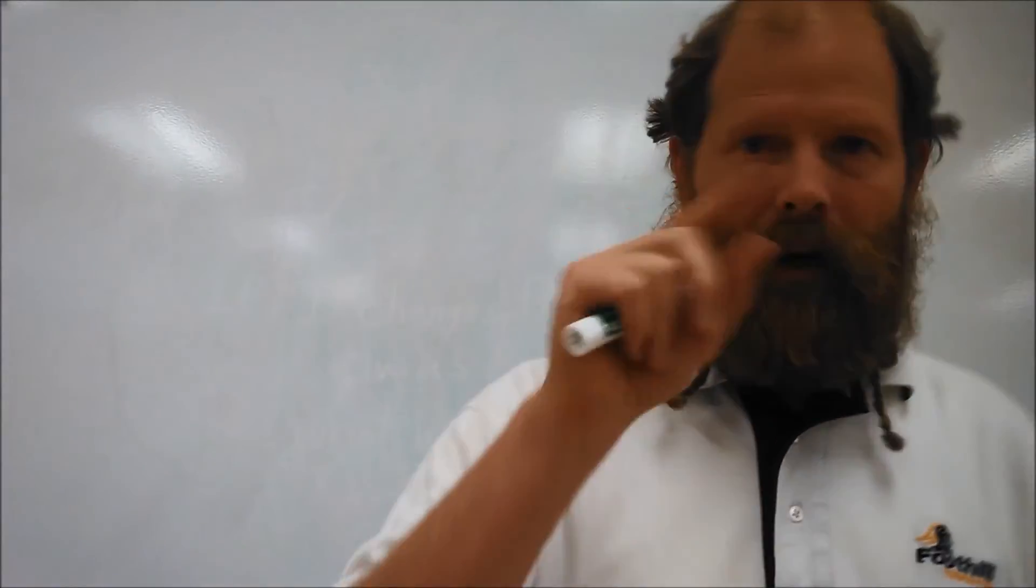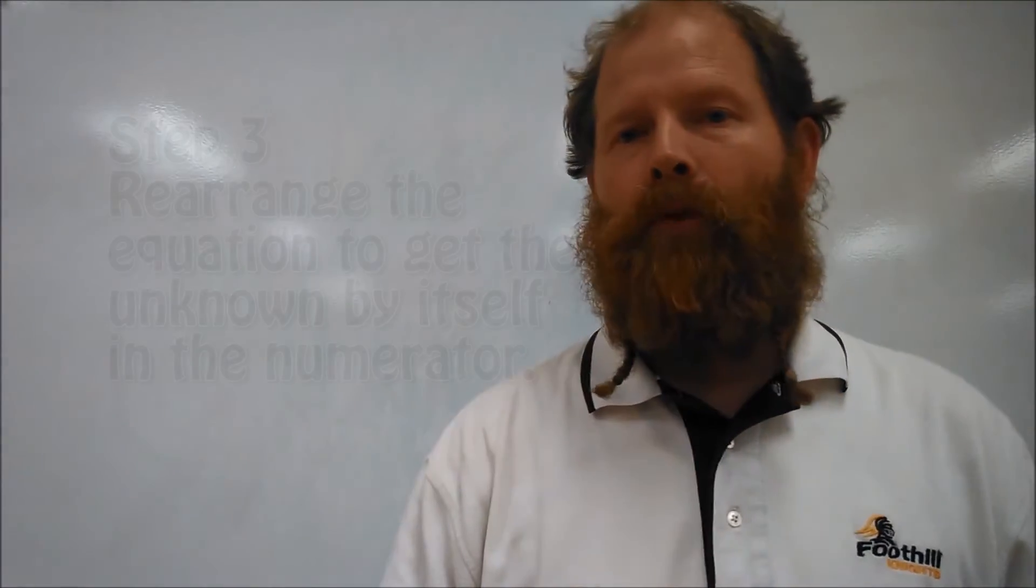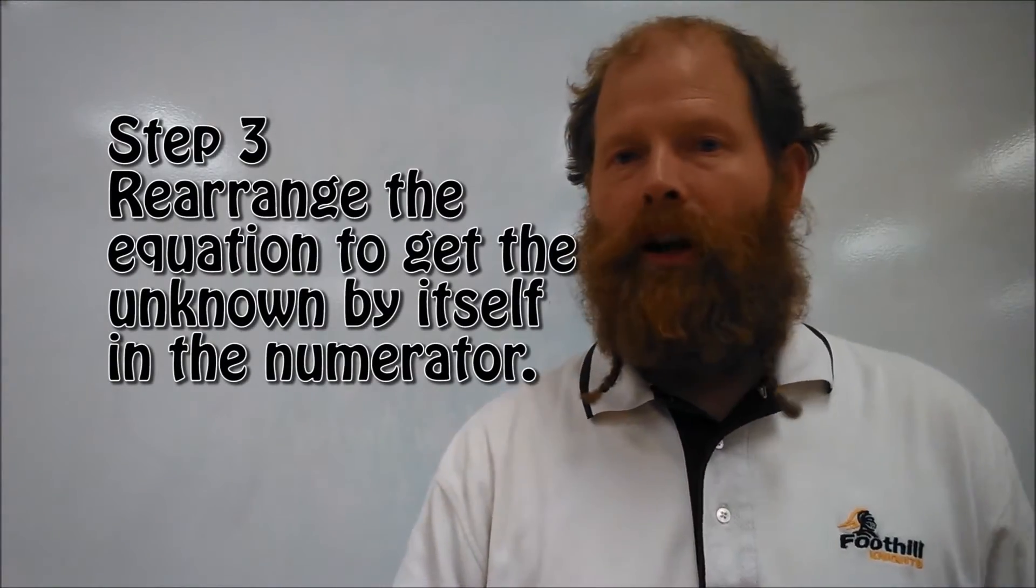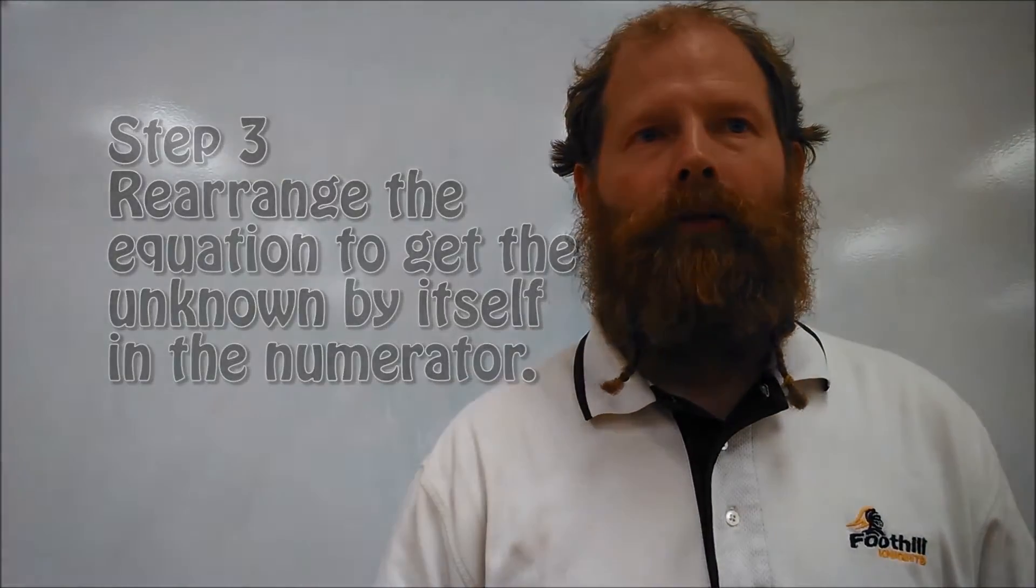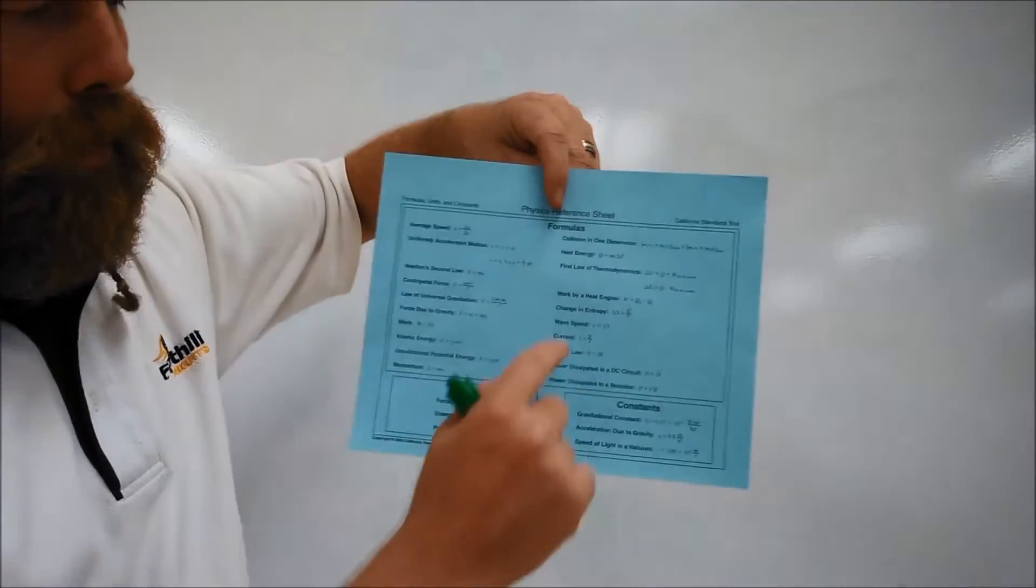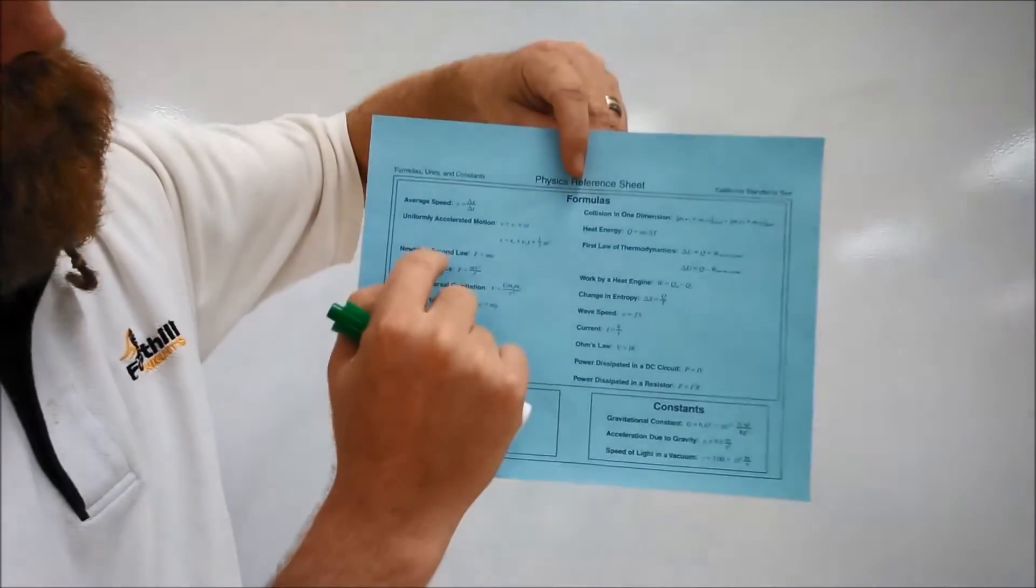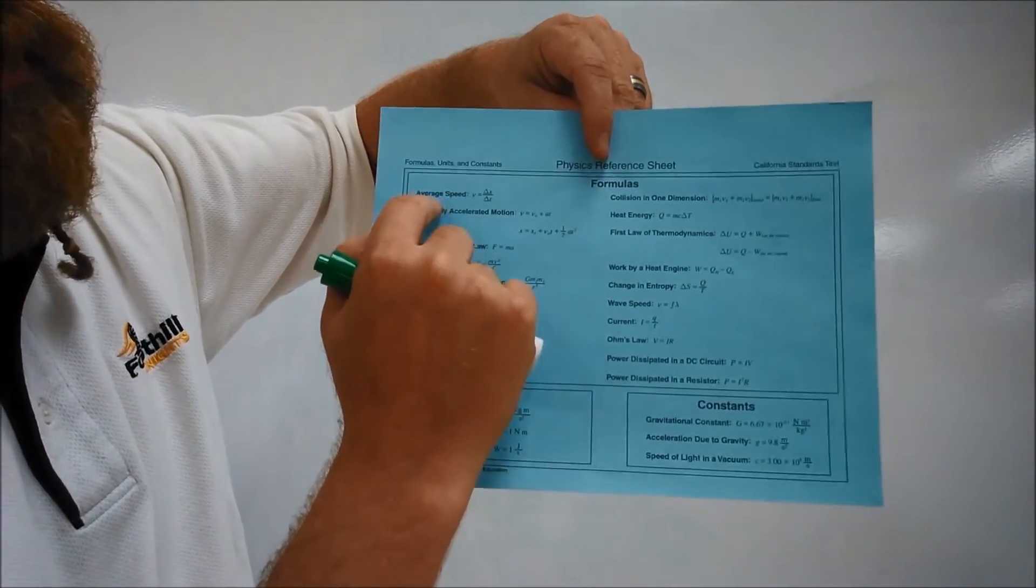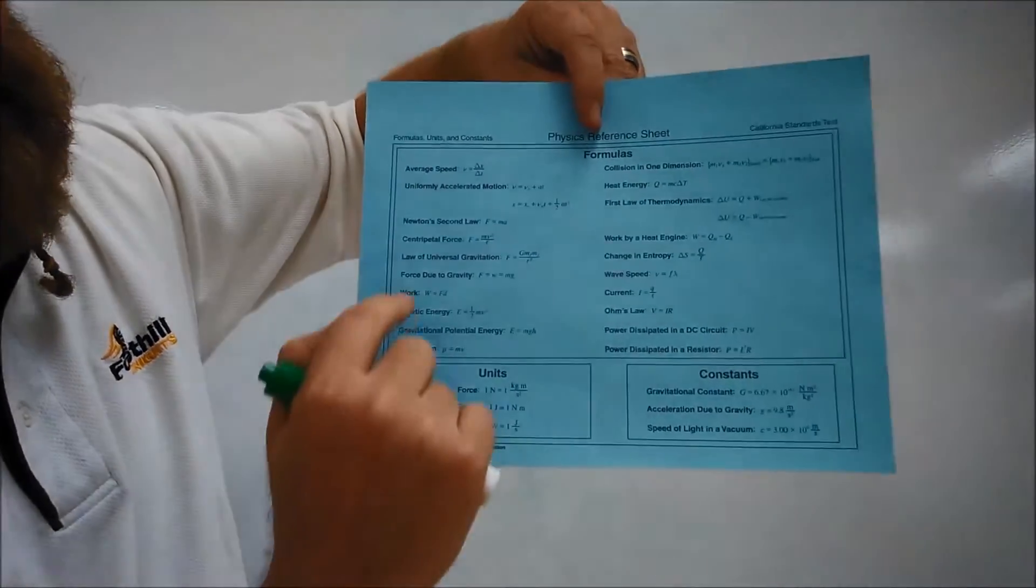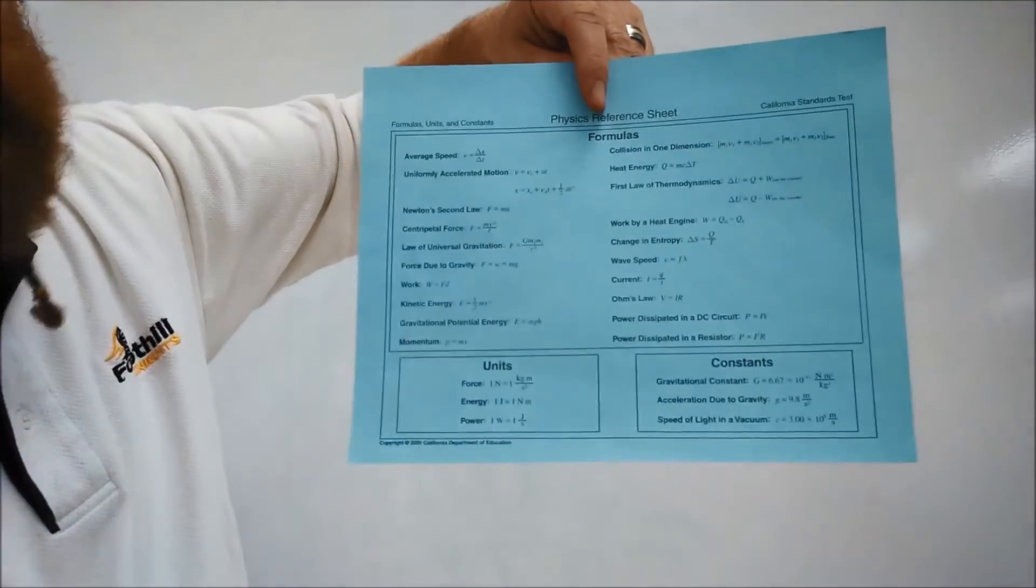So step two, just write a two, and next to that put F equals ma. Step three we're going to cover tomorrow because for some people that's more challenging. That's where we rearrange the equation to get by itself in the numerator the thing that we're looking for. But for today, we'll only do problems that are already solved for the thing we're looking for. So if we're using Newton's second law, F would be the unknown. If we're doing average speed, V would be the unknown. If we're doing work, W would be the unknown.